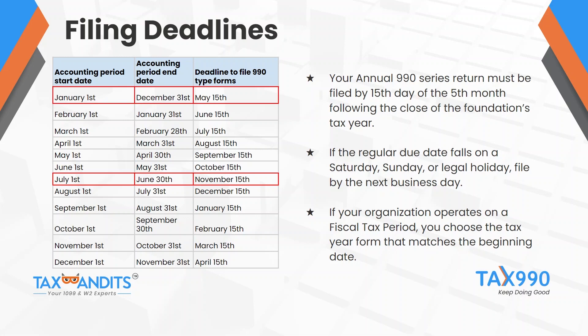As a tax preparer, you may have clients all year round that need to file the 990 series return based on different organization tax periods. Right now, Tax 990 is focusing on the May 15th deadline for calendar tax year organizations, and organizations that operate on a fiscal tax year of July 1st through June 30th and filed an extension for their November 15th deadline.